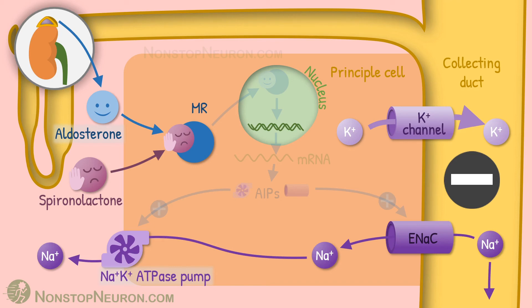Due to decreased reabsorption of sodium, the lumen becomes less electronegative. This decreases potassium secretion, thus preventing its loss in urine. And this is how spironolactone works as a potassium sparing diuretic.